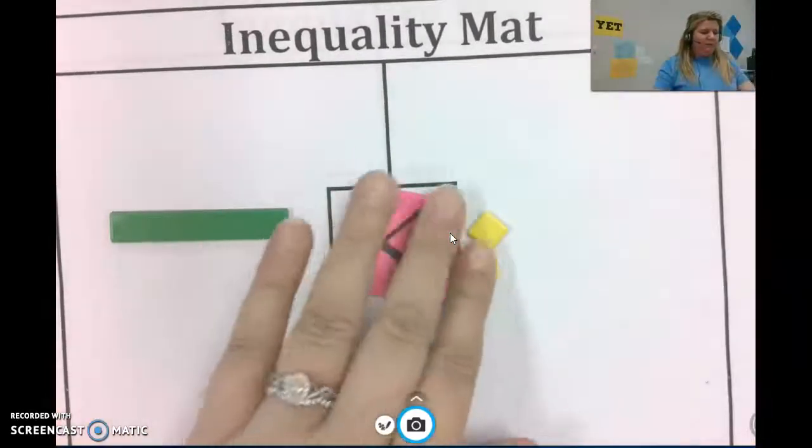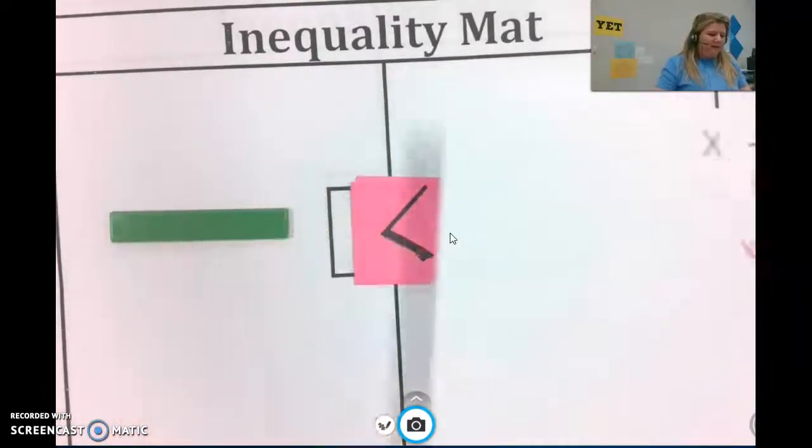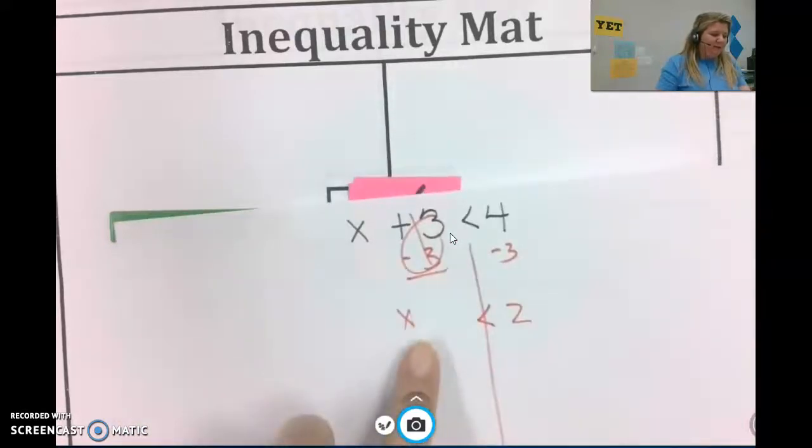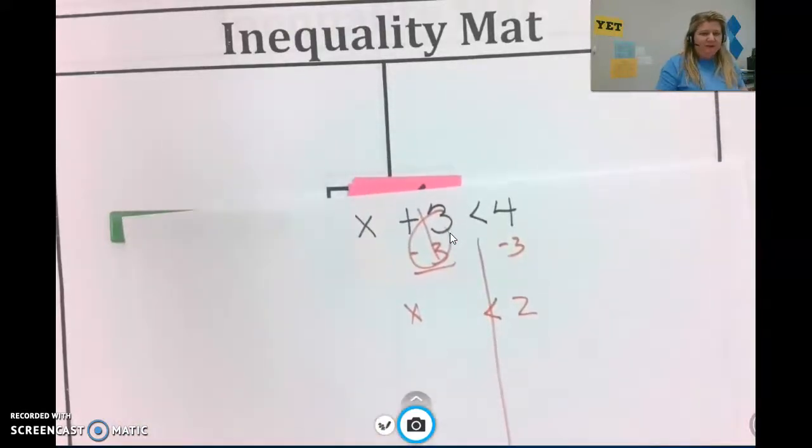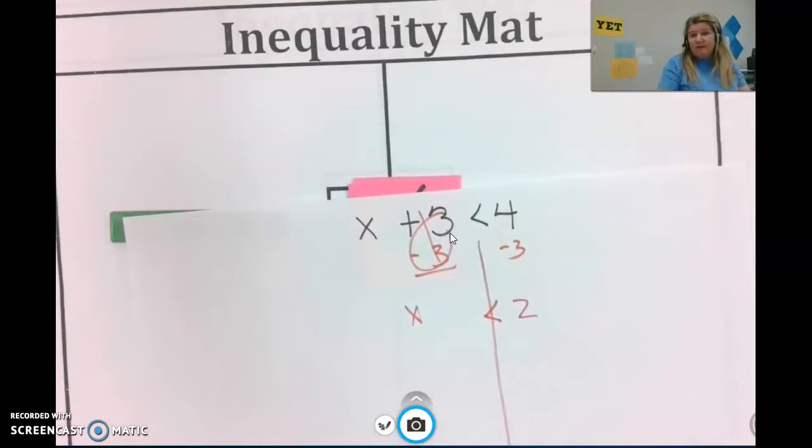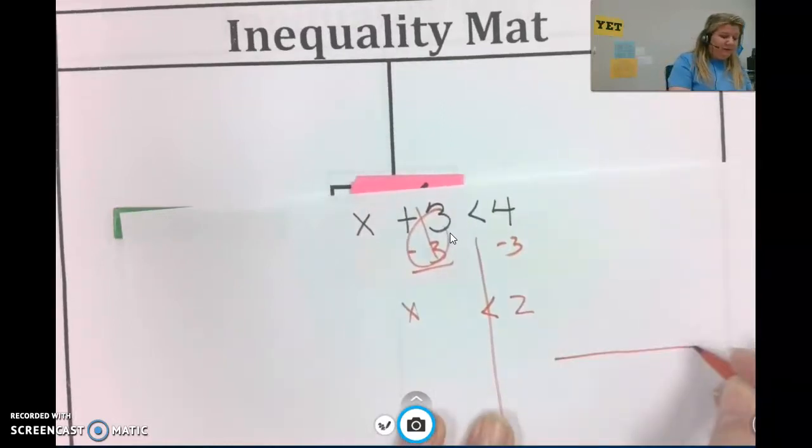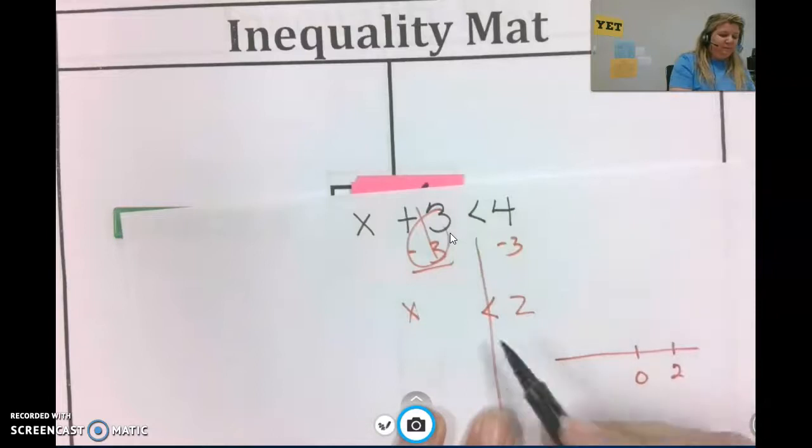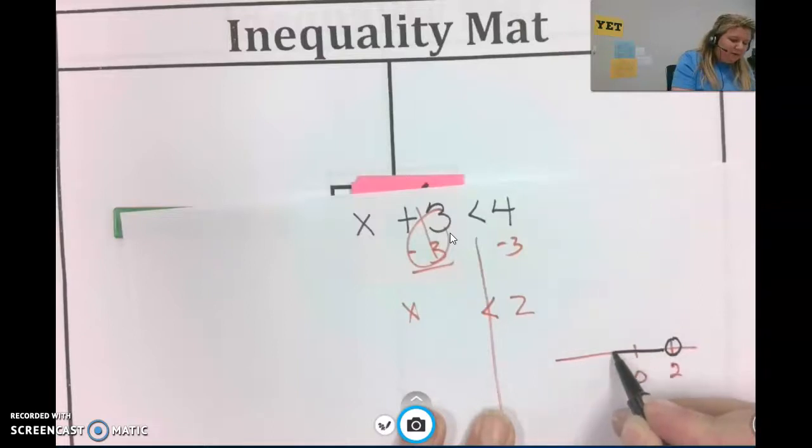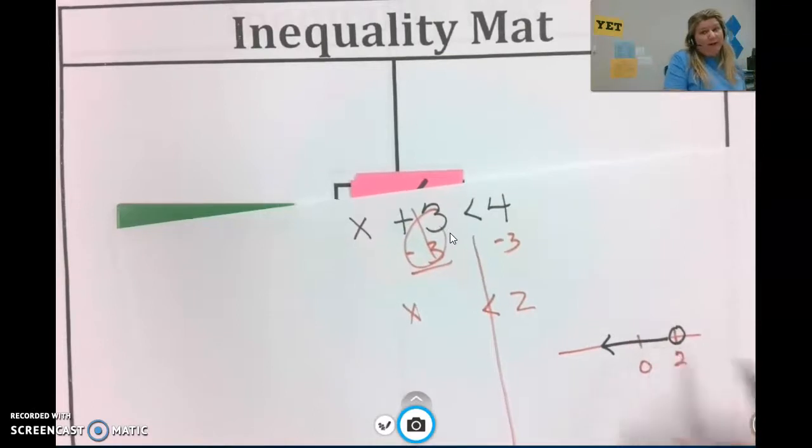And that leaves me with x is less than 2. So when I think about what numbers could satisfy that, what numbers would be less than 2. So 1 is less than 2, negative 7 is less than 2. It could actually be lots of numbers. So if I have a number line and I have 2 here, is 2 less than 2? No. So I'm not including 2, but I'm including the numbers to the left of 2. It could even be like 1 and a half.